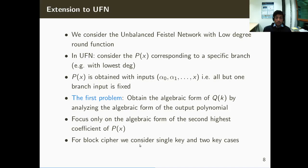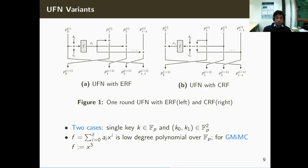For the key recovery attack, we consider two cases: either you use one key element from the underlying field, or you use two key elements. The two variants considered are UFN with expanding round function (ERF) and UFN with contracting round function (CRF). In the UFN with expanding round function, the round input is first added with the key and the round constant over the prime field, and this function is defined as a low degree polynomial — for GMMC specifically, this function is simply x cubed.